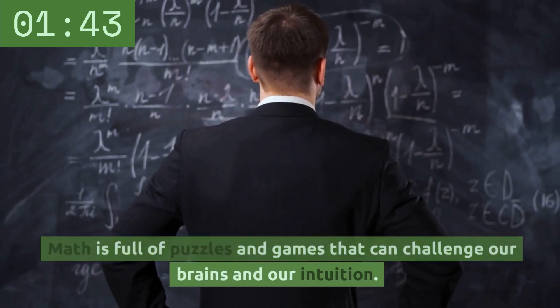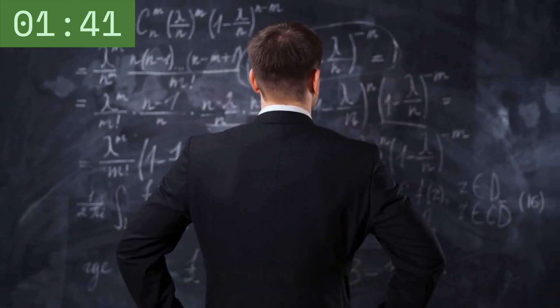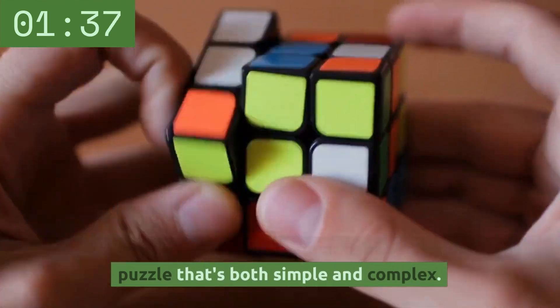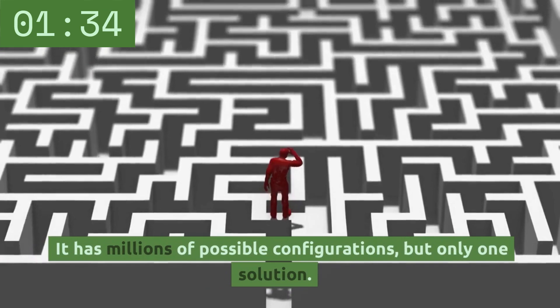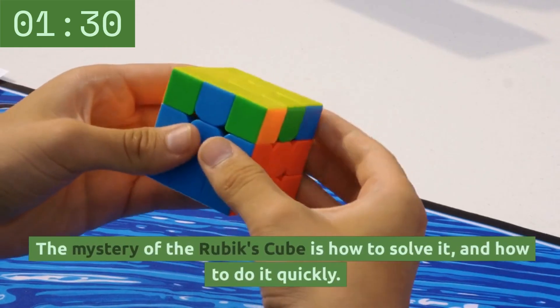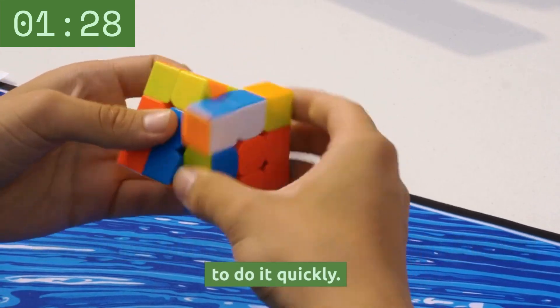Math is full of puzzles and games that can challenge our brains and our intuition. The Rubik's Cube is a classic example of a mathematical puzzle that's both simple and complex. It has millions of possible configurations, but only one solution. The mystery of the Rubik's Cube is how to solve it, and how to do it quickly.